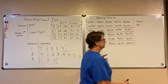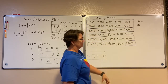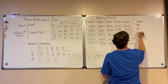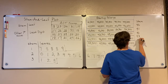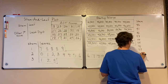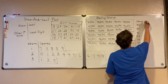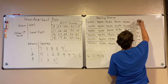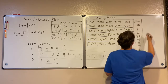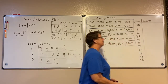My largest stem is at 51, so I'm going to count my stems all the way down to 51: 40, 41, 42, 43, 44, 45, 46, 47, 48, 49, 50, and 51. Now my leaves are going to be those hundreds places, so I'm just going to go through my data values and add the leaves. I have 40,700 and then 40,900, so this seven means 40,700 and the nine means 40,900.